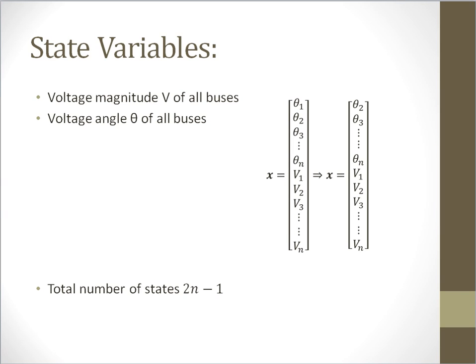Hello everyone, welcome back to power system state estimation. In the last class, we were discussing state variables. The voltage magnitudes of all buses and the voltage angles of all buses are considered as state variables. All these state variables form a vector and we call it x. However, as the voltage angles are related variables, we need to take one bus as reference.